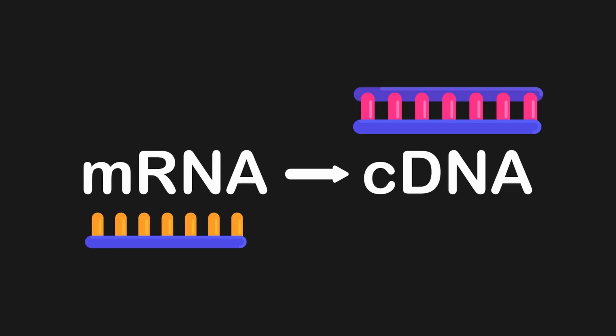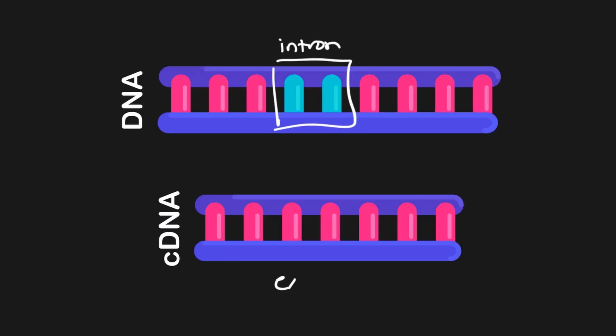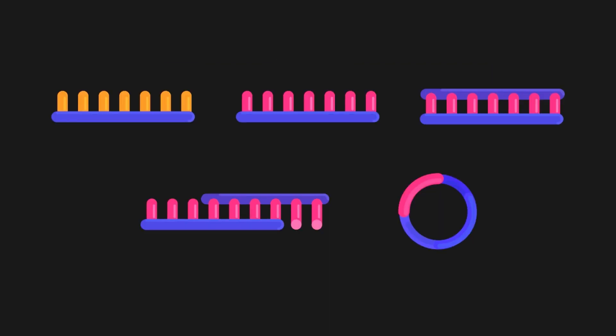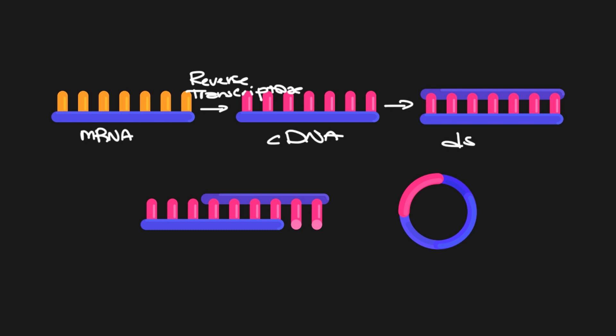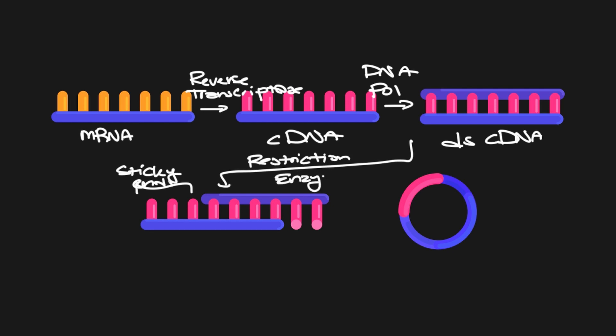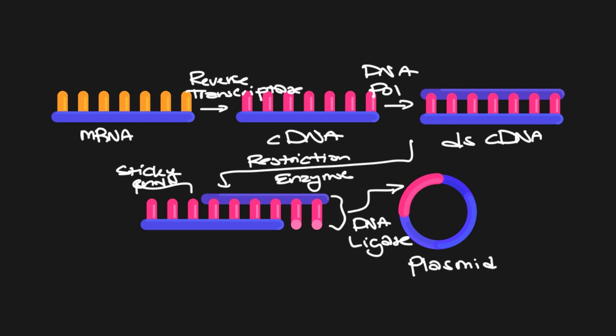In summary, cDNA is DNA generated from mRNA, and can be cloned into organisms to study the role of certain genes. Since cDNA is copied from mRNA, it lacks introns and will be smaller than the corresponding genomic DNA. Its creation uses reverse transcriptase to convert RNA to DNA, then DNA polymerase to make it double-stranded, and finally restriction enzymes and DNA ligase to insert it into a plasmid, which is then transfected into the cell being studied.